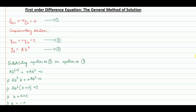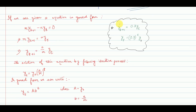Welcome everyone. Today I will discuss the general method of solution of a first order difference equation. In the last class I discussed how to solve a first order difference equation with the help of the iterative method of solution. Let us recall some points of the previous class. We solved the equation y(t+1) = 0.7·y(t), and by following the iterative method of solution we get y(t) = (0.7)^t · y(0).